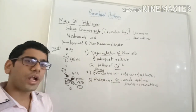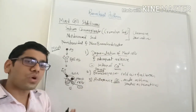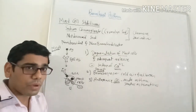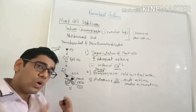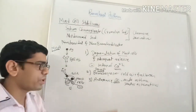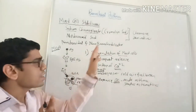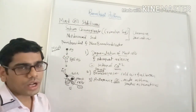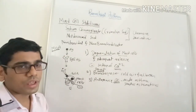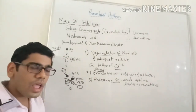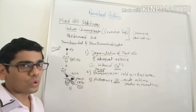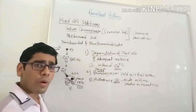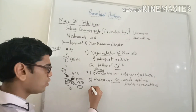This is also similar to leukotriene antagonists — leukotriene antagonists also will not antagonize bronchoconstriction which has already happened. If the patient has acute asthma, mast cell stabilizers and leukotriene antagonists are not useful. But if bronchoconstriction has not yet occurred, both have a prophylactic role. This is their mechanism of action.